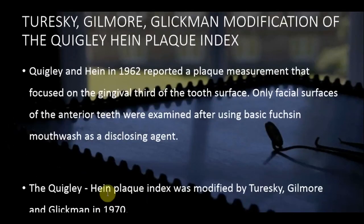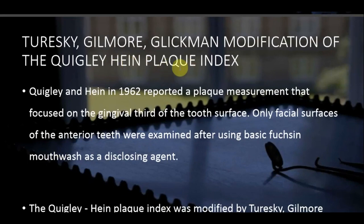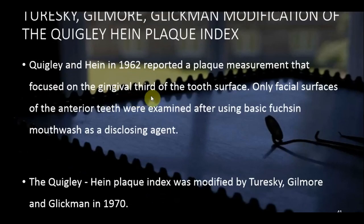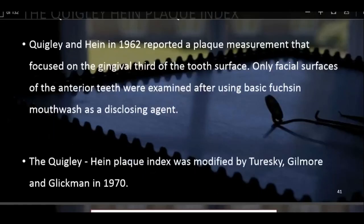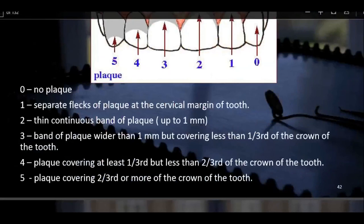Another plaque index is the Quigley-Hein Plaque Index. Originally described by Quigley and Hein in 1962, it focused on plaque measurement at the gingival third of the tooth. Only the facial surfaces of anterior teeth were examined, using basic fuchsin mouthwash as a disclosing agent. In 1970, it was modified by Turesky, Gilmore, and Glickman to include all teeth rather than only anterior teeth.